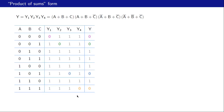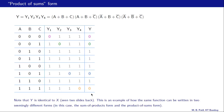Comparing the truth table for Y with the table we saw for function X two slides earlier, the entries are identical — Y is identical to X. This is an example of how the same function can be written in two seemingly different forms: X was in the sum of products form and Y was in the product of sums form. They look completely different but are actually the same function.